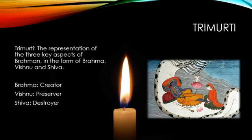The key account of creation includes the Trimurti in their roles as creator, preserver, and destroyer. Brahma — not to be confused with Brahman — is the creator. Vishnu is the preserver, and Shiva is the destroyer.